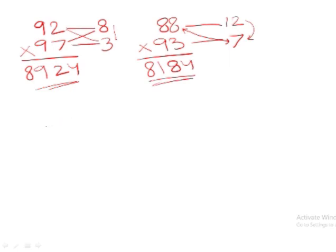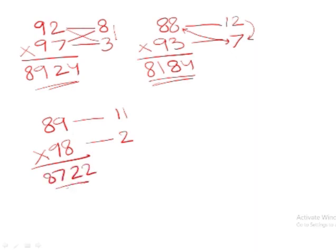Let's do another one. 89 times 98. Here it is 11 numbers away from 100. Here it's just 2 numbers away. 98 or 89 minus 2 gives you 87. 11 times 2 gives you 22. That's your answer.